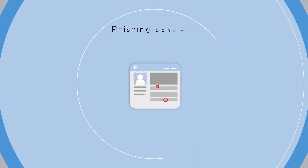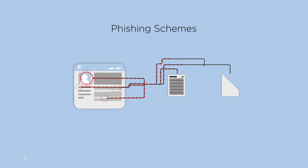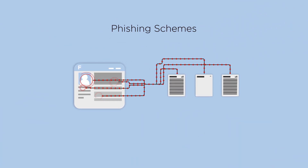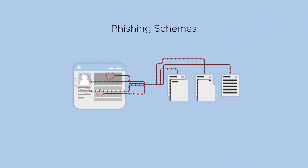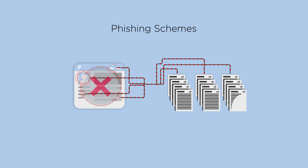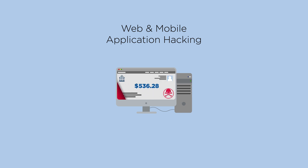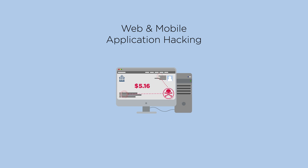Hackers use sophisticated phishing scams powered by social engineering to fraudulently obtain customer information and take over accounts. Web and mobile application hacking targets banking apps to spy on customer activity, obtain customer credentials, and modify transaction details to steal money.